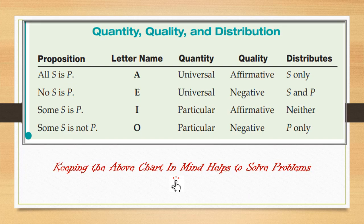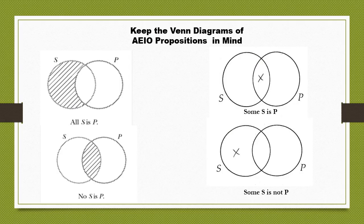Here is a quick-reference chart for distribution. In A proposition, only the subject is distributed. In E proposition, both S and P are distributed. In I proposition, neither the subject nor the predicate is distributed. In O proposition, only the predicate is distributed and not the subject. Here is the Venn diagrammatic representation of all four propositions: 'All S is P' (A), 'No S is P' (E), 'Some S is P' (I), and 'Some S is not P' (O).